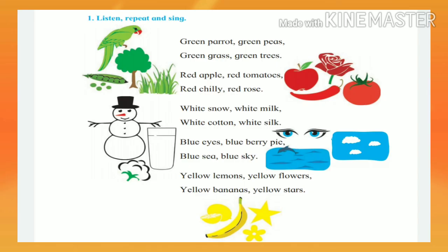So now we have seen the poem. You repeat behind me. Green parrot, green peas. Green grass, green trees. Red apple, red tomatoes. Red chili, red rose.